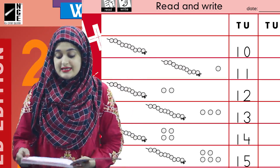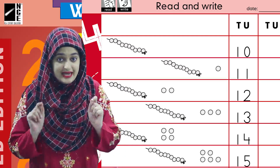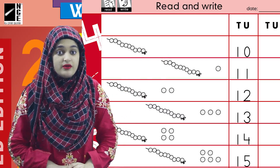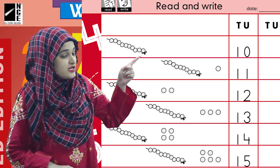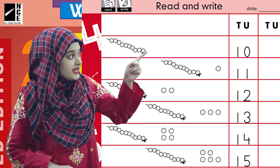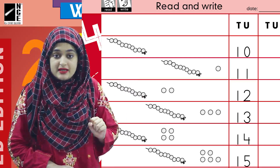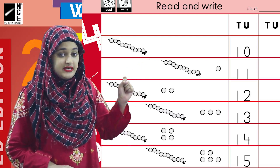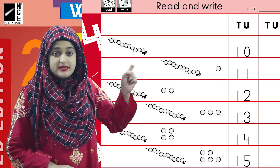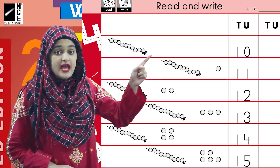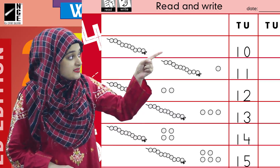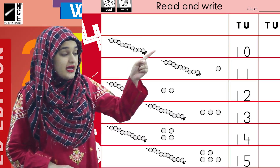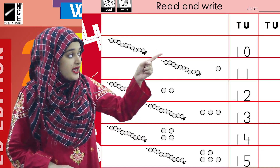Now, as this is a string of 10 beads, the number is written in front of it. Look — this is a string of 10 beads and here is a single bead. There is only one bead. So when a string of 10 beads meets one bead, they make 11. 10 beads and 1 bead make 11. 10 and 1 is 11.